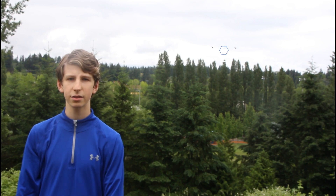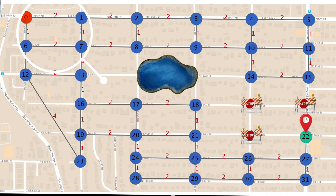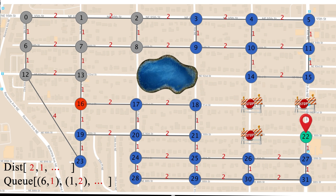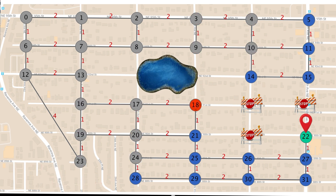Dijkstra's begins at the start node and checks the edge weights of the neighboring nodes, adding them to a distance array and a queue. Dijkstra's marks this node as visited and goes down the queue to find the next node with the shortest distance to it, and checks its neighbors until the end node is found. By only updating the distance array with the shortest sum of edge weights from the start node, it ensures that the quickest path can be found.